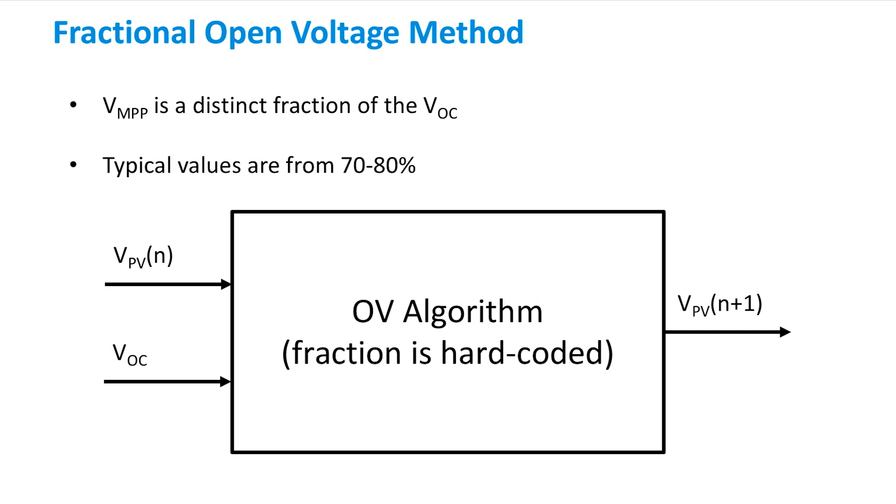Here, we need both the voltage which is currently applied to the PV and the open circuit voltage as an input. The algorithm will then calculate whether or not the current voltage is higher or lower than the hard-coded fraction of the open circuit voltage and change the panel voltage appropriately.